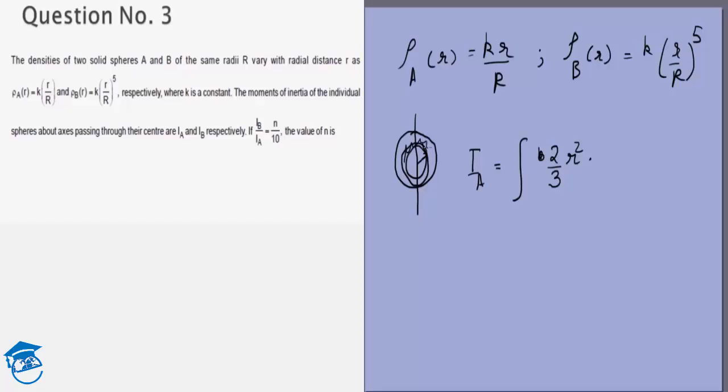Now what will dm be? dm will be the small mass of this. So the mass of this will be the volume of this multiplied by the density. The volume of this is 4πr²dr multiplied by the density which is k(r/R).